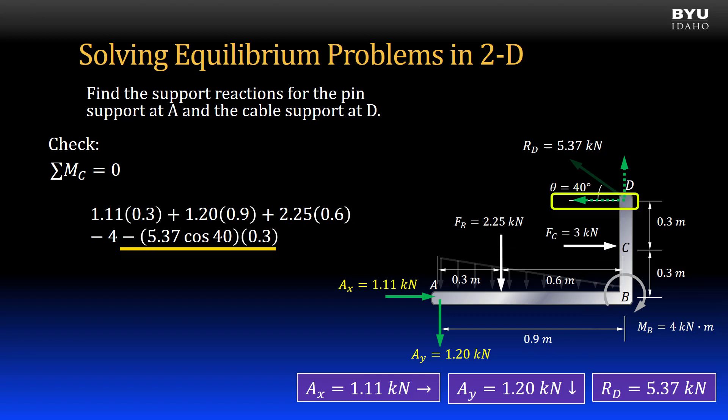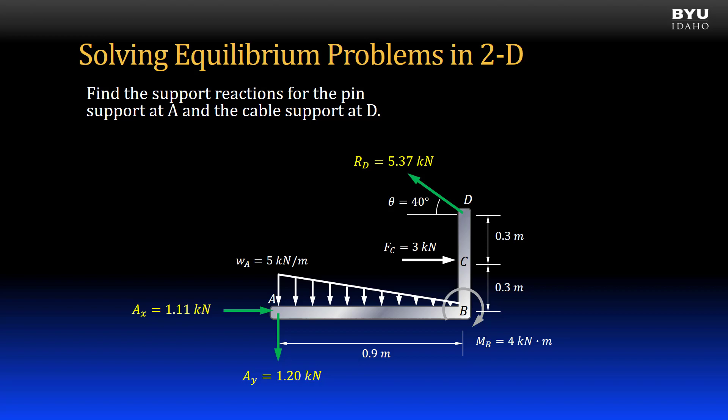Doing the math gives an answer of 0, which verifies that the resultant forces I found are correct. If the answer had not been 0, then the member is not in static equilibrium, meaning I have an error somewhere. I recommend checking your results, especially in an exam scenario.